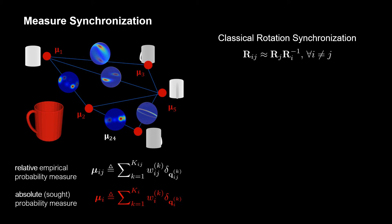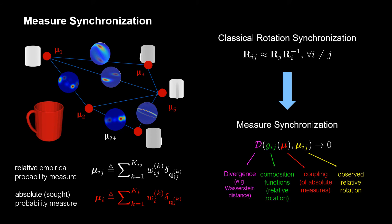We generalize the classical notion of cycle consistency to our problem by replacing the distances between rotations by the divergences between probability measures such as Wasserstein distance.